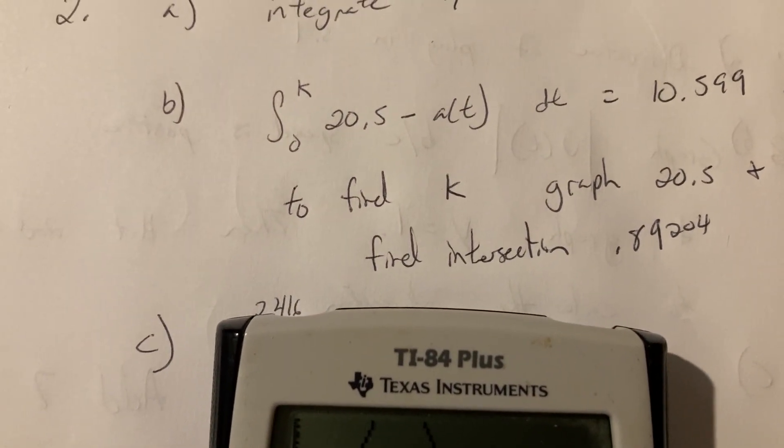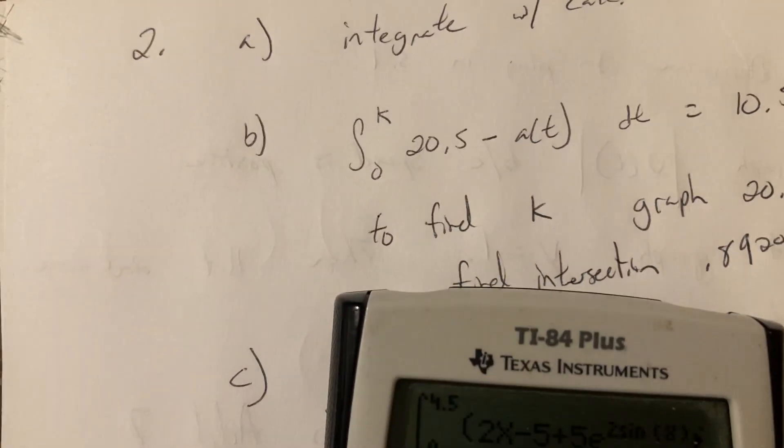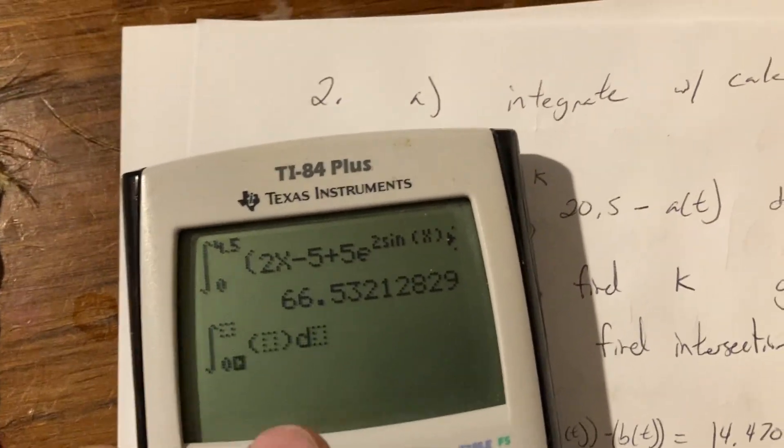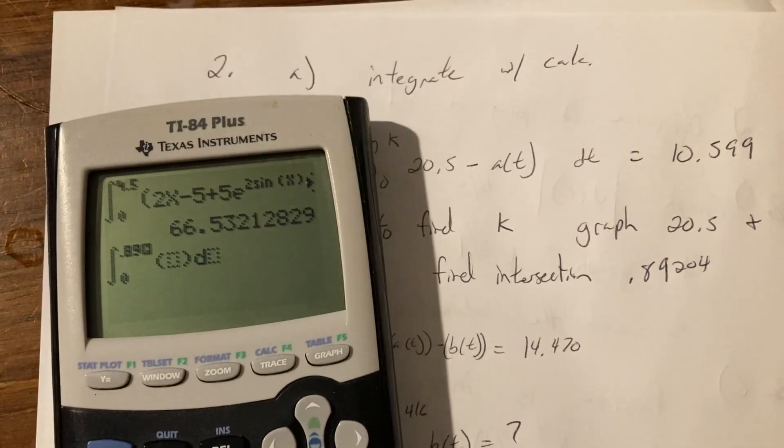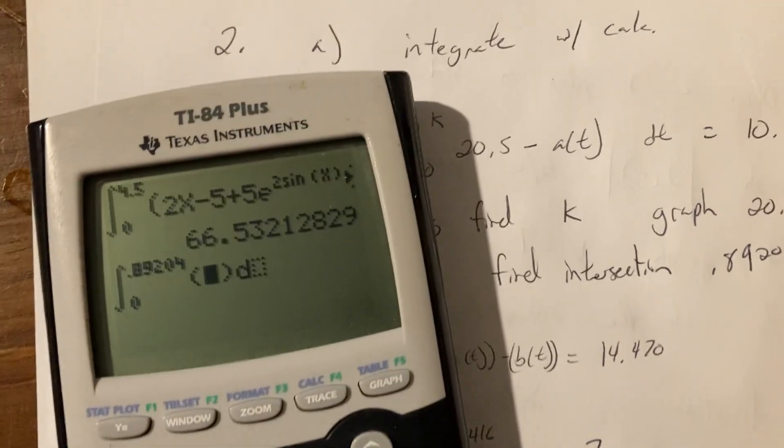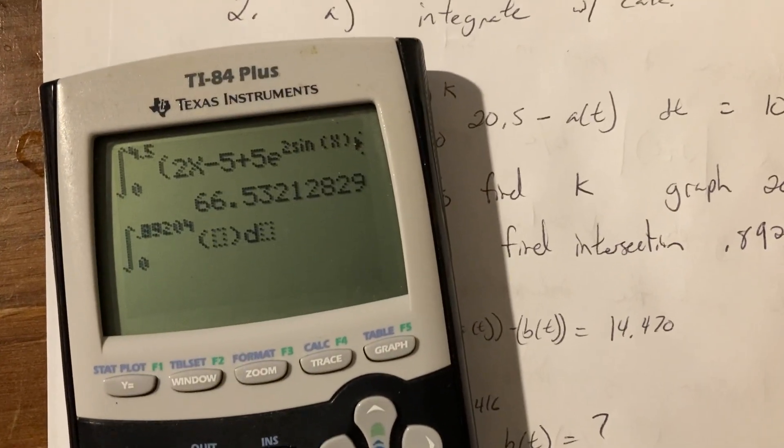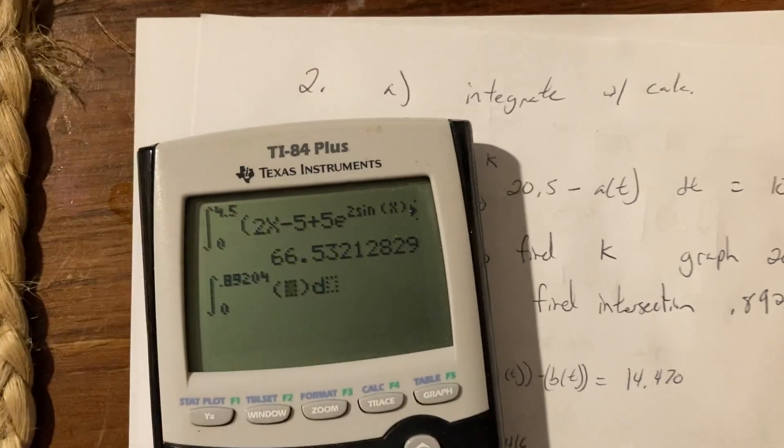Now we're going to take the integral. Math, oh sorry, Math 9, 0 to K which is 0.89204. And here we could actually type in like the y1. I'll show you that later.